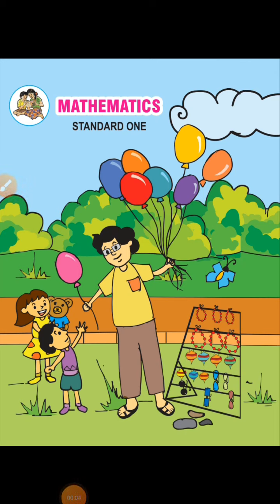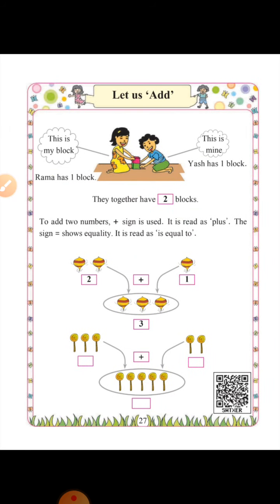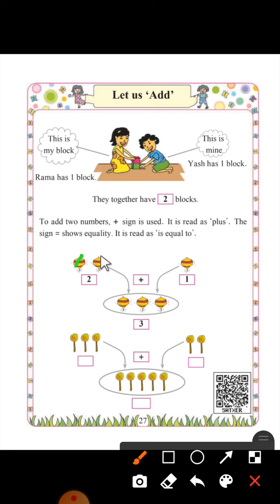Hello students, in maths we will start a new topic: Let us add. This is Rama and Yash. Rama has one block and Yash has one block. Together they have two blocks. This is one block and this is two blocks — total they have two blocks. See this picture: these are two tops. One, two — plus, add one top. Together we will count: one, two, three.